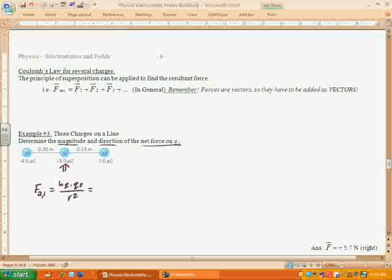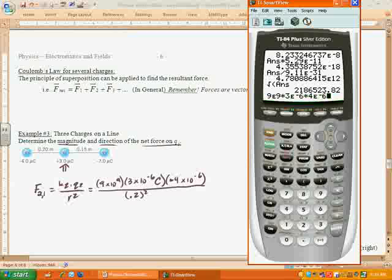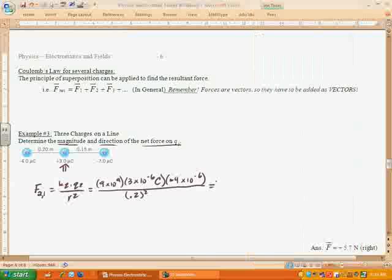So, 9 times 10 to the 9th times Q1. So, that's 3 times 10 to the negative 6 Coulombs. Micro is microcoulombs times 4 times 10 to the negative 6 Coulombs. Now, again, I'm just going to ignore the positives and negatives for now. And then divide it by the radius which is 0.2 squared. So, let's go ahead and find out what that gives us. 9e to the 9th times 3e to the negative 6th times 4e to the negative 6th. And then we're going to divide that by 0.2 squared. And we get a force of 2.7 Newtons.